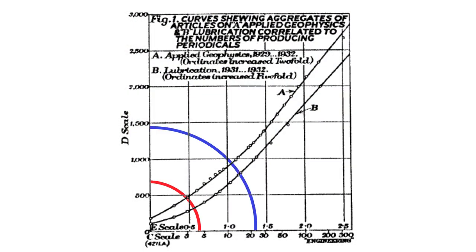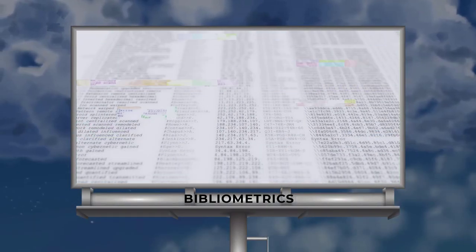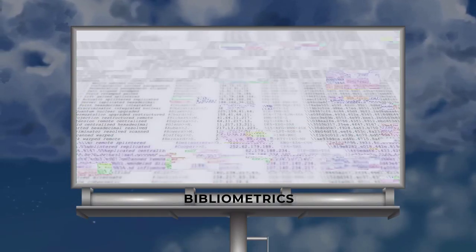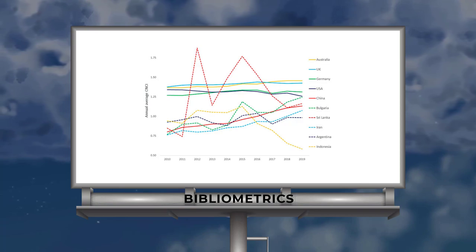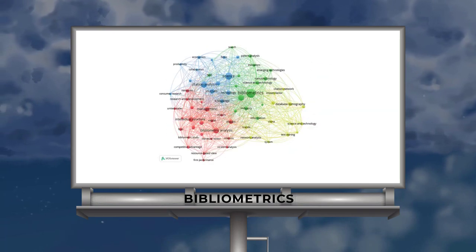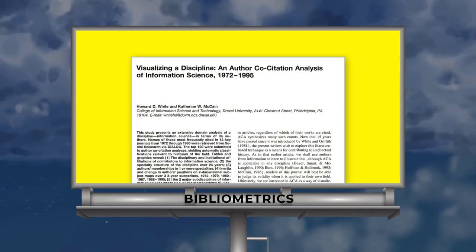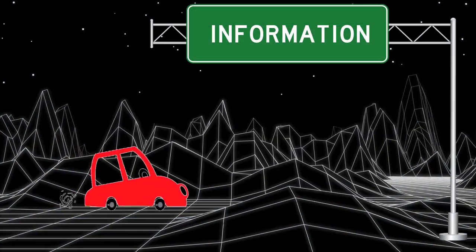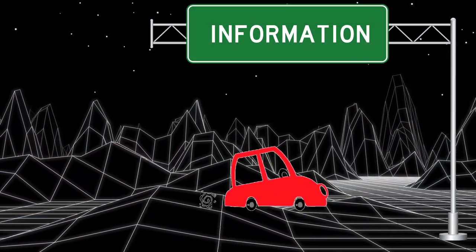Bradford's Law of Scattering, shown here, empowered an area of information science now known as bibliometrics, that uses quantitative methods to discover patterns within and across literatures. Bradford's insight.